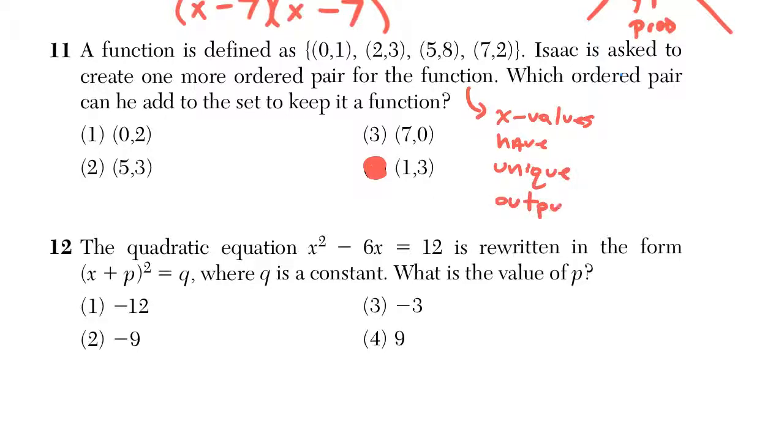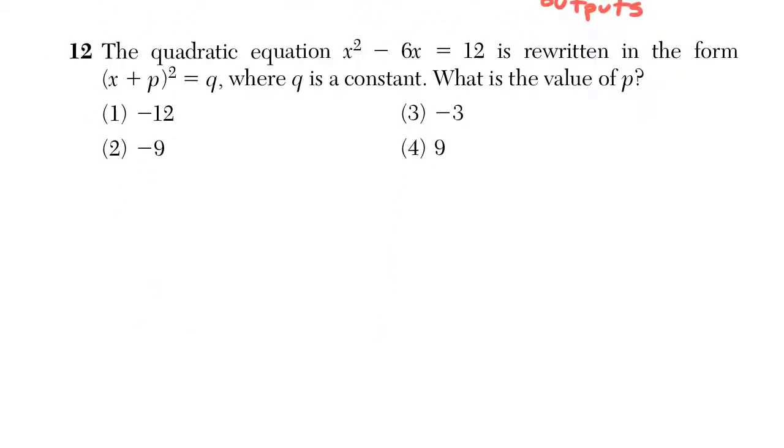Choice four is okay, even though you might be saying, isn't the three there? We're allowed to have outputs repeat. It's the input that we want to be unique and be different.